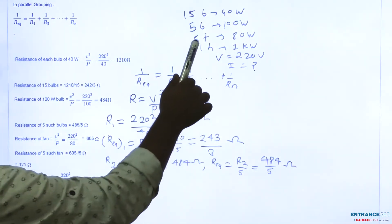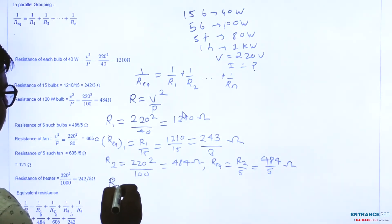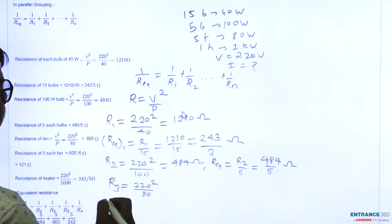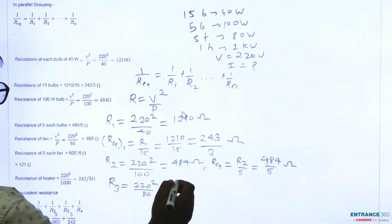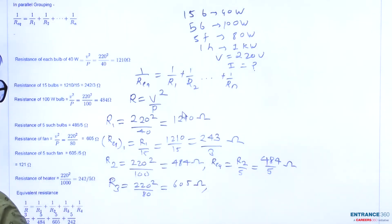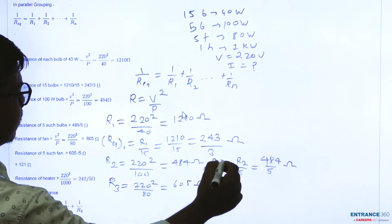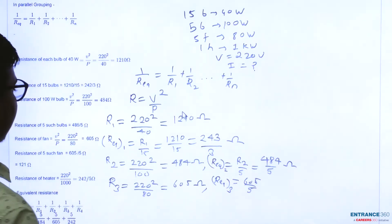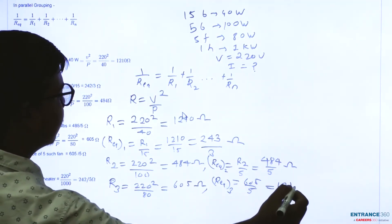Now for the 5 fans, each rated at 80 watt. Resistance of each fan: R3 = (220)²/80 = 605 ohm. Since 5 fans are connected in parallel, R_eq3 = 605/5 = 121 ohm.